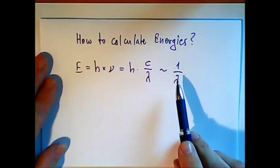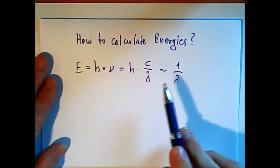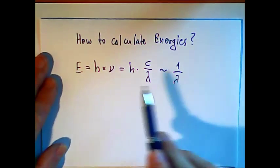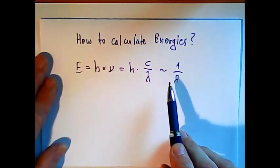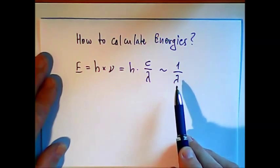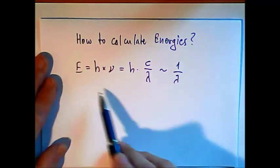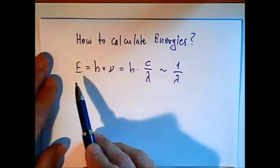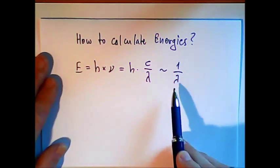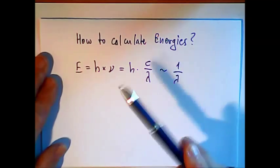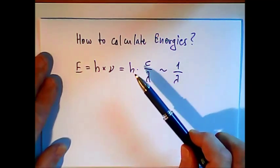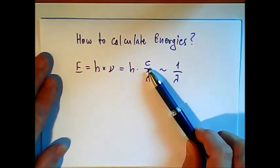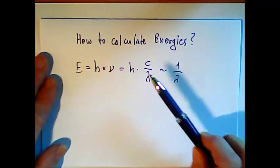If we have a short wavelength, we have high energy. If we have a long wavelength, we have low energy. Therefore in spectroscopy, we prefer to express energy in the form of 1 over lambda rather than calculating in joules using these constants, because we get very complicated numbers in that case.